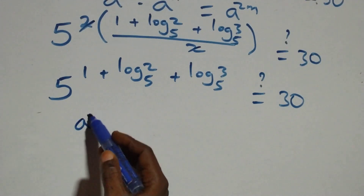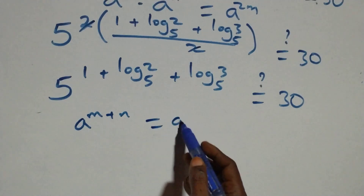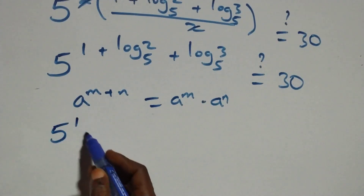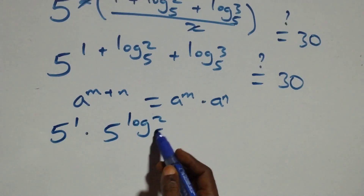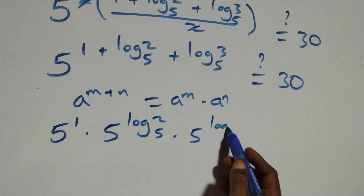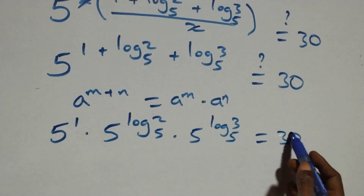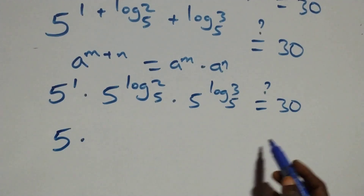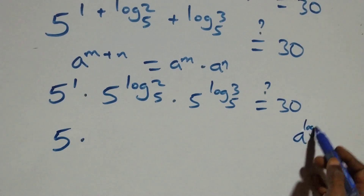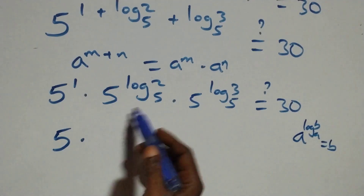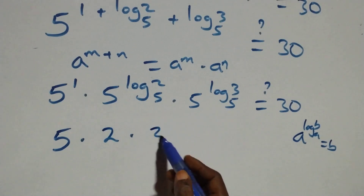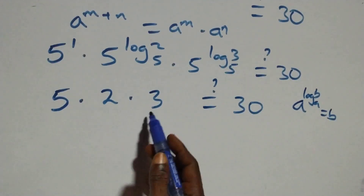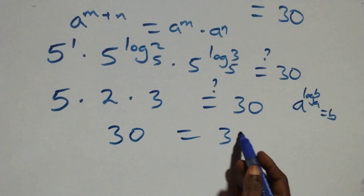We apply the index law: a raised to power (n plus n) is the same as a^n times a^n. So we have 5^1 times 5^(log₅2) times 5^(log₅3) equals 30. Now 5^1 is 5. Using the identity a^(log_a b) = b, we get 5 times 2 times 3. That is 5 times 2 equals 10, and 10 times 3 equals 30, which equals 30 on this side.